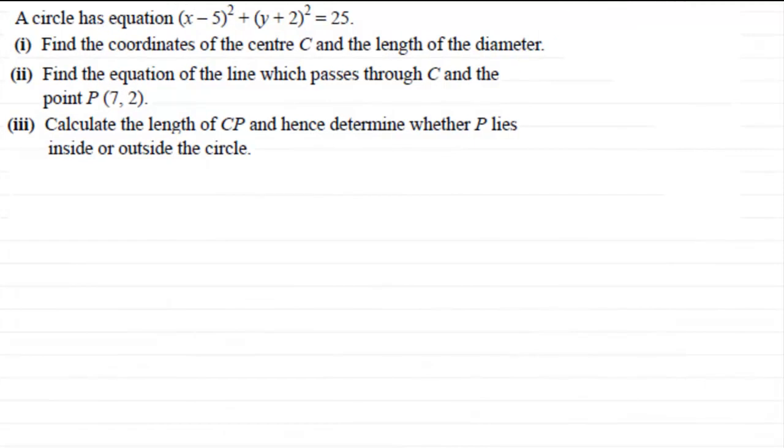Hi. Now I've got an example here based on the equation of a circle. I've got a circle with equation (x-5)² + (y+2)² = 25. In part one, you've got to find the coordinates of the centre C and the length of the diameter. In the second part, find the equation of the line which passes through C and the point P(7,2). And finally, in part three, calculate the length of CP and hence determine whether P lies inside or outside the circle.